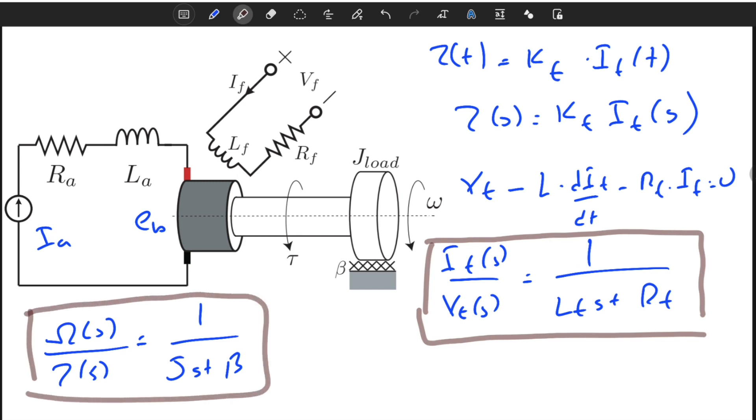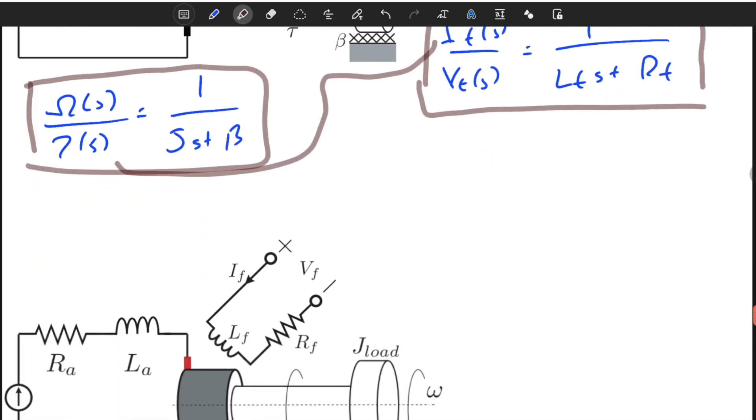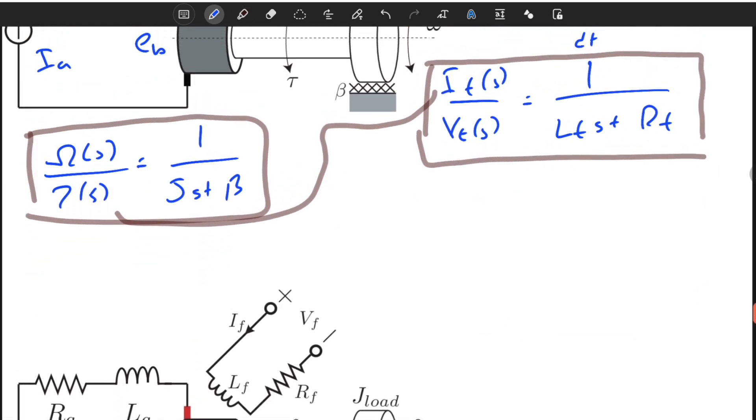This is everything that we need to model a simple field control DC motor. We have two transfer functions, and the output of one of the transfer functions is somehow the input of the other transfer function. It's not exactly true because we also have conversion from i_f to torque.